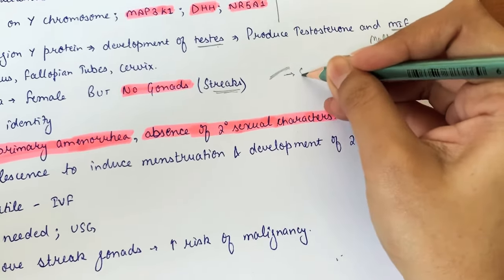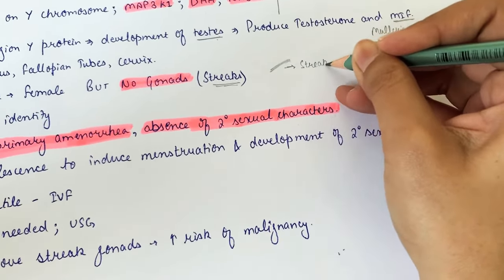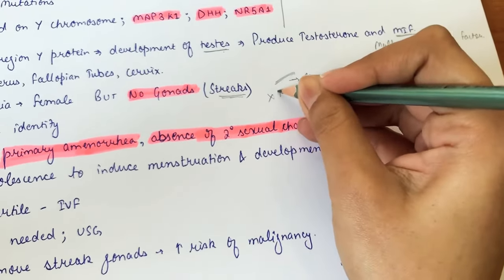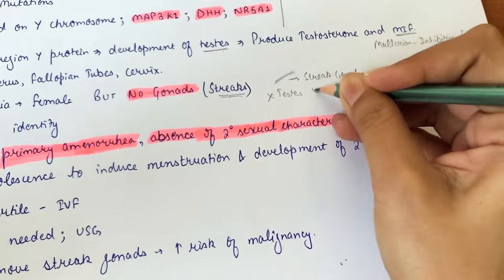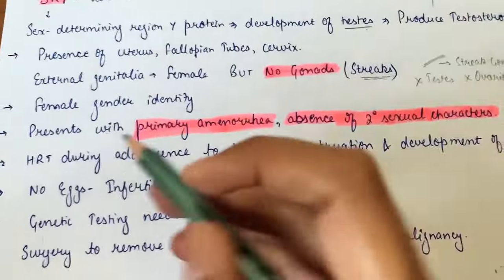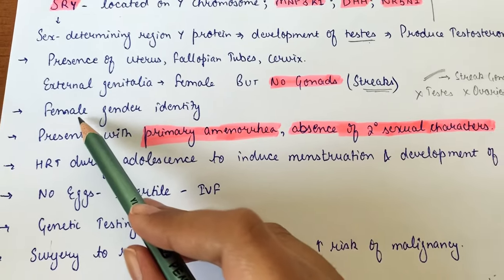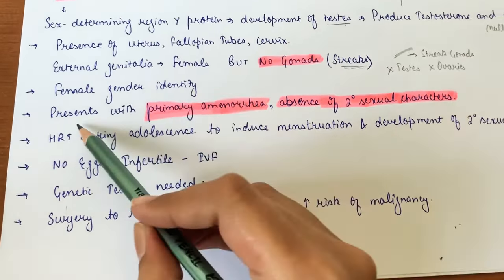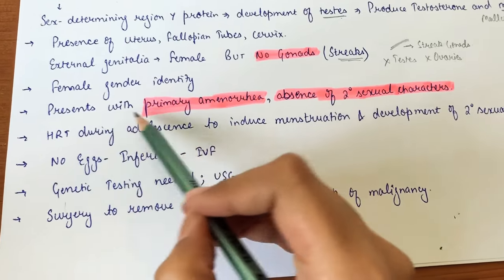These are termed streak gonads because there are no real testes or ovaries, just fibrous tissue bands. These individuals are raised with female gender identity and typically come to medical attention with primary amenorrhea and absence of secondary sexual characteristics.